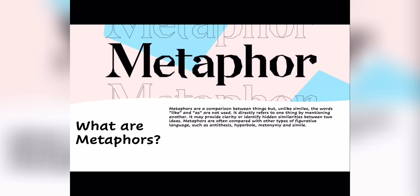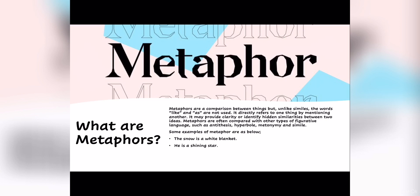Now let's move on to some examples of metaphors. Number 1: the snow is a white blanket. Number 2: he is a shining star. Number 3: Tom's eyes were ice as he stared at her. Number 4: the falling snowflakes are dancers. Number 5: the calm lake was a mirror.